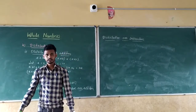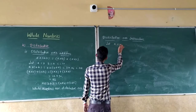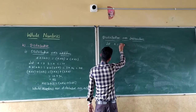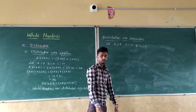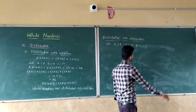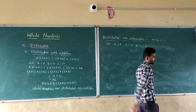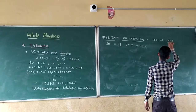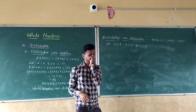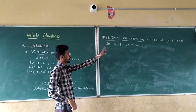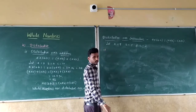Distributive over Subtraction. Similarly, let us take an example. Let A equals 9, B equals 5, and C equals 2. Distributive over subtraction means A into (B minus C) equals A into B minus A into C. Wherever the minus is there, that is the difference — that is distributive over subtraction. Check whether both answers are the same.